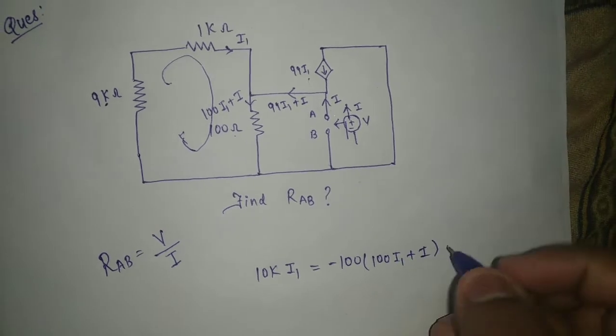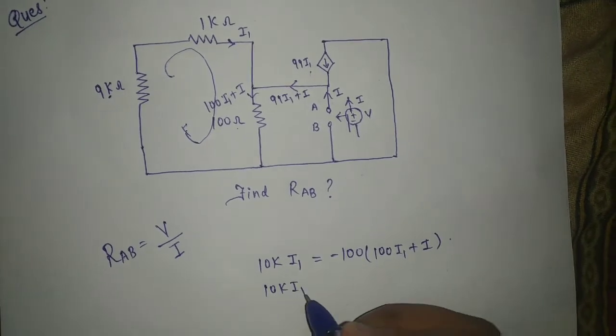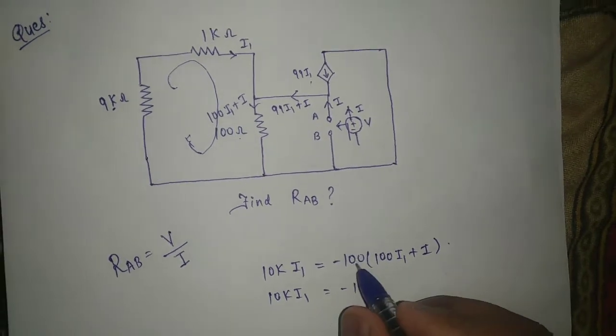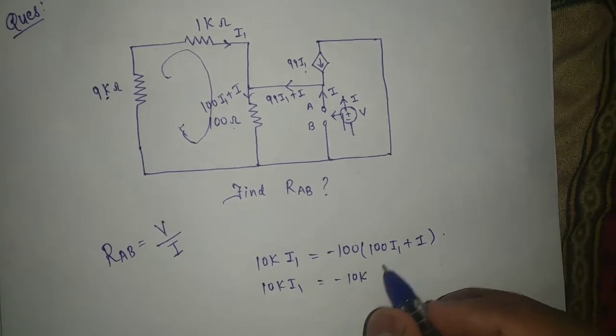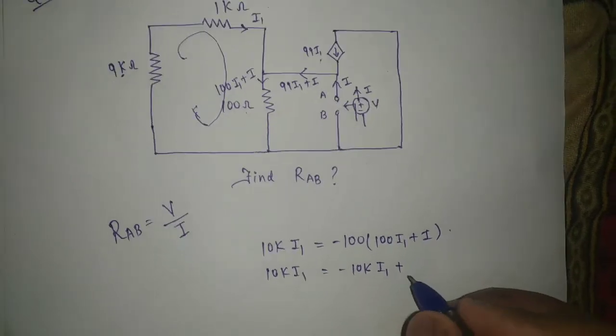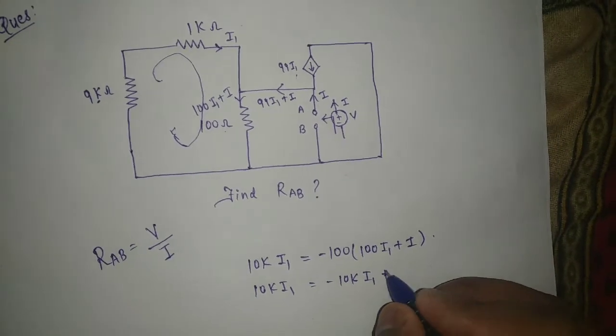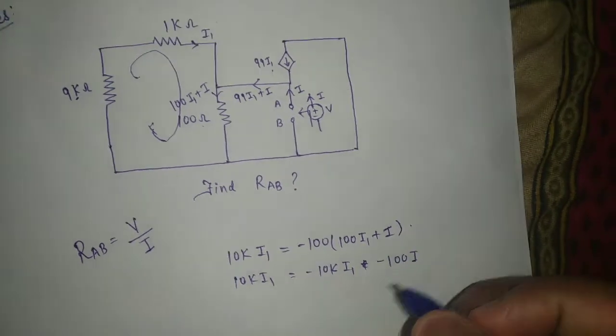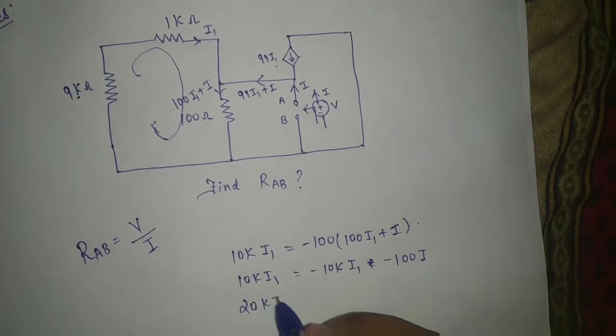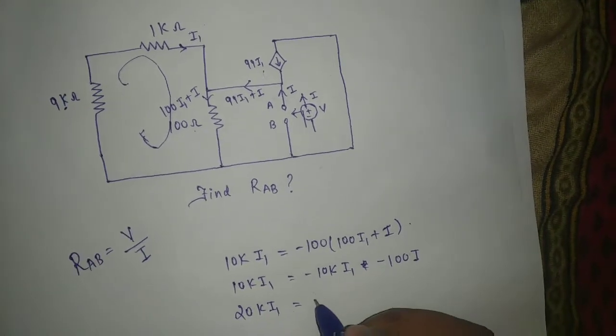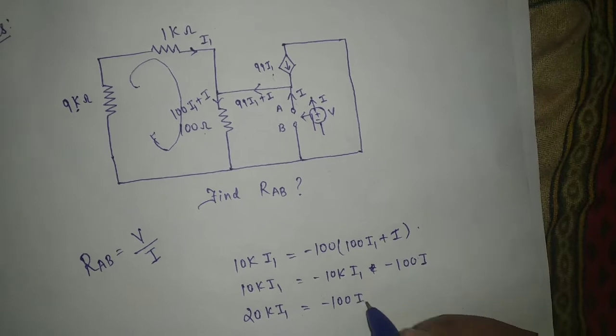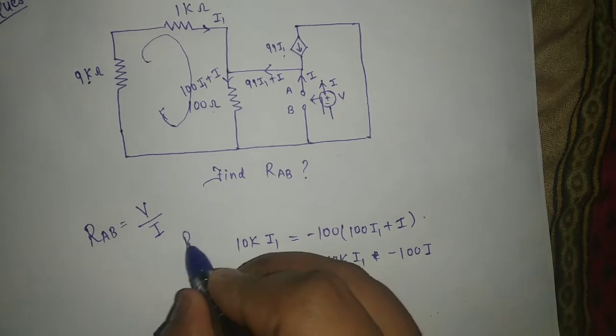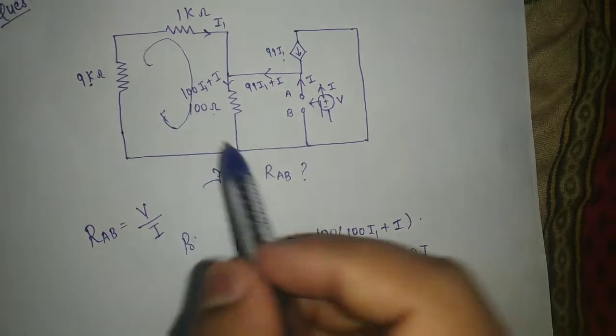So it is 10K I1 is equal to minus 10K I1 plus minus 100 I. So 20K I1 is equal to minus 100 I in this loop.